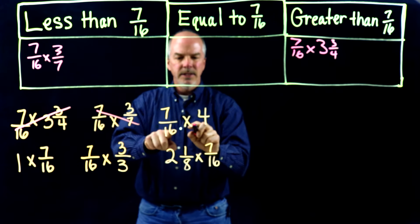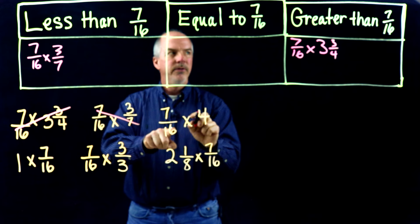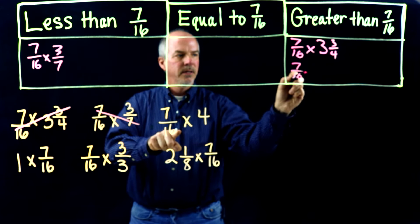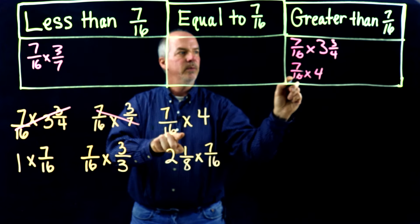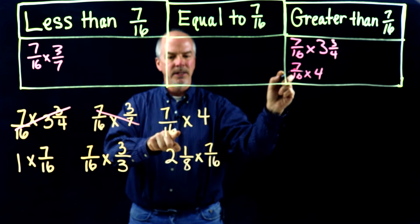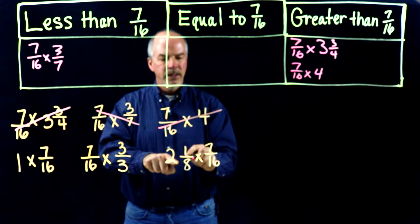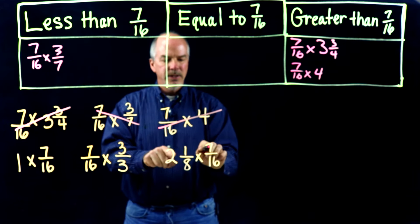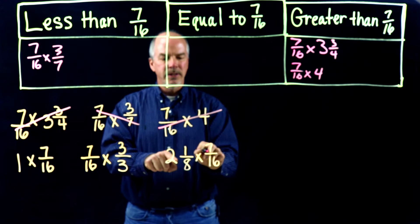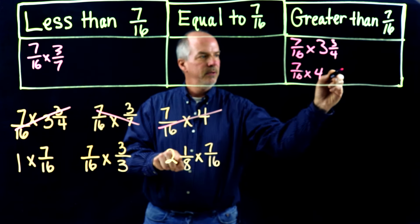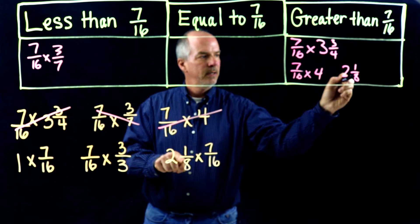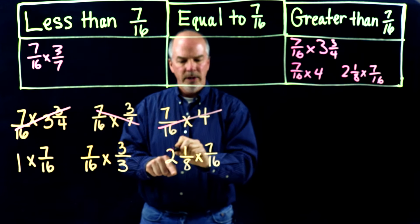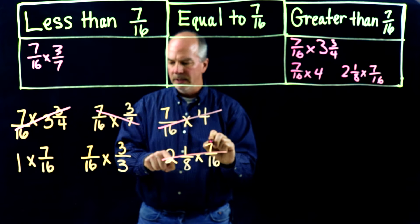7 sixteenths times 4 — well, 4 is greater than 1, so my product will be greater than 7 sixteenths. And here, 2 and 1 eighths times 7 sixteenths — they're switched around, but it's still the case that my product will be greater than 7 sixteenths, because 2 and 1 eighths is greater than 1. So 2 and 1 eighths times 7 sixteenths goes in the 'greater than 7 sixteenths' category.